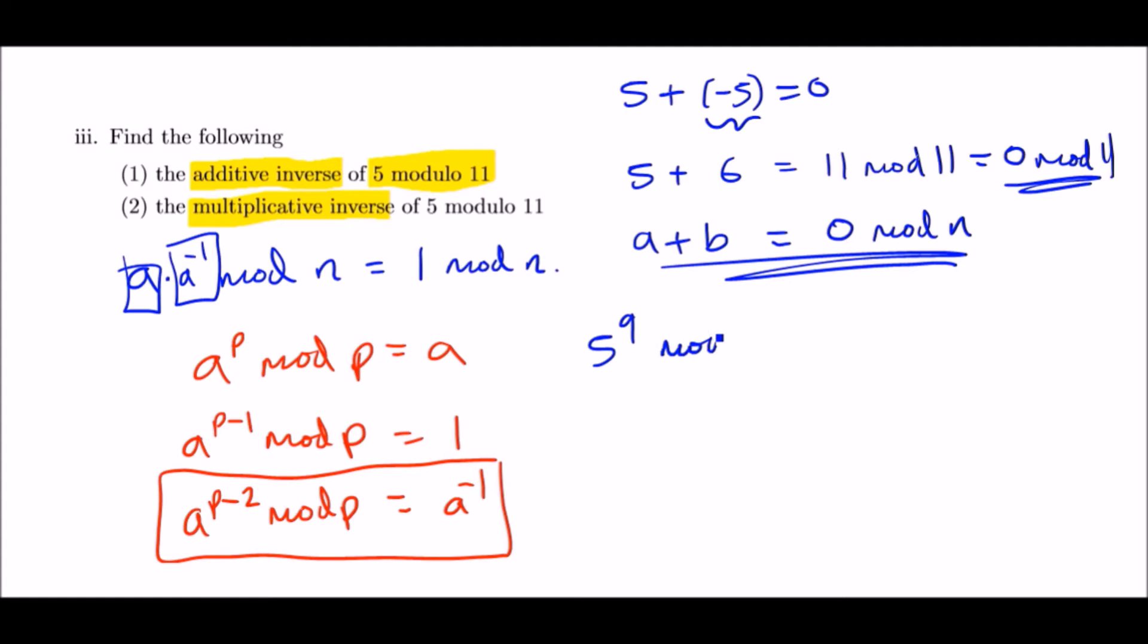This should equal 5 to the negative 1, which is technically the value needed to multiply the original value 5 to get 1. But we need to use a whole number, so let's work out 5 to the power 9 mod 11.